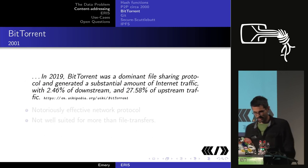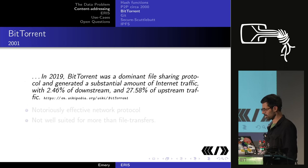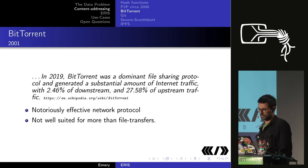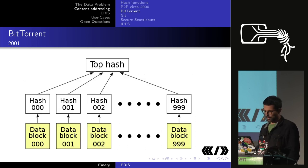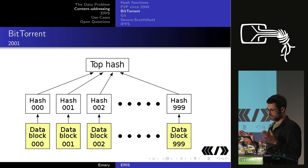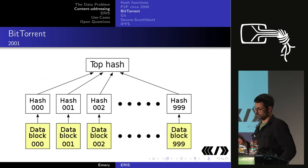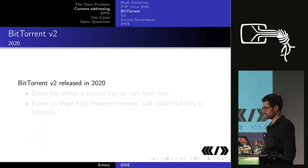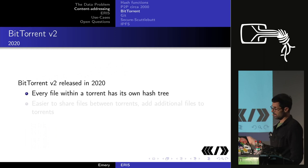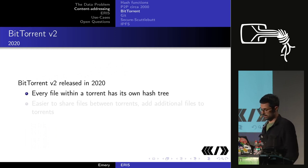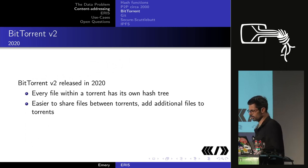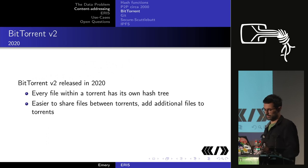BitTorrent was a big improvement and is still one of the most popular file-sharing protocols. It's good for transferring files. BitTorrent improved things by breaking all the data into pieces, hashing each piece, putting the hashes in the info file, and having one hash to refer to the info file. Last year a new BitTorrent version was released where every file in the torrent has its own tree of hashes, making it easier to share files between different torrents and produce updating torrents without rehashing everything.